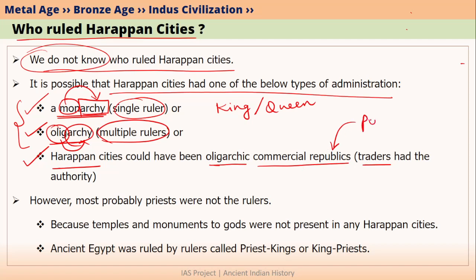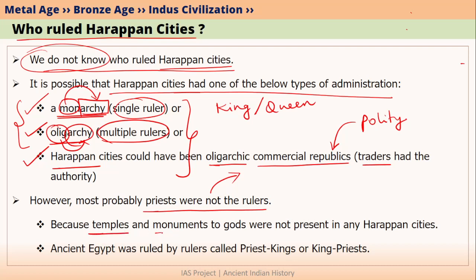I hope you know the meaning of the word republic from your polity syllabus. So any of these three types of systems could have been the possible authority ruling Harappan cities. At the same time, it is probable that priests were not the rulers. Priests were probably not rulers because we did not find any evidence of temples or monuments to gods in Harappan cities. Such monuments and temples were present in ancient Egypt, where ancient Egypt was evidently ruled by a priest-king. But Harappan cities were not ruled by priest-kings.